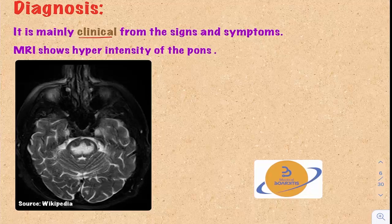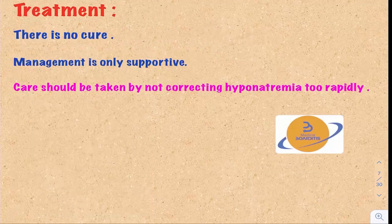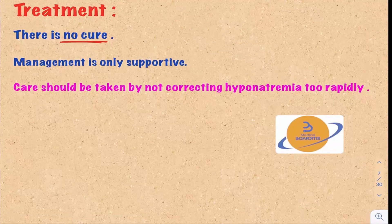The diagnosis is mainly clinical through the signs and symptoms. MRI will show hyper-intensity of the pons. This is an MRI image that shows hyper-intensity of the pons region, which denotes central pontine myelinolysis. Unfortunately, there is no cure for central pontine myelinolysis — the management is only supportive. Care should be taken by not correcting the hyponatremia too rapidly, and this is the main goal of this entire lecture.